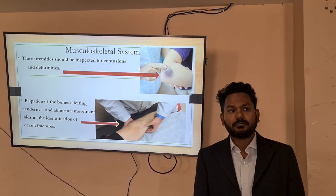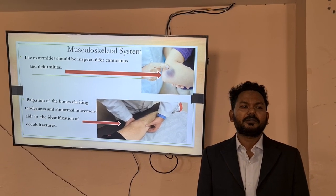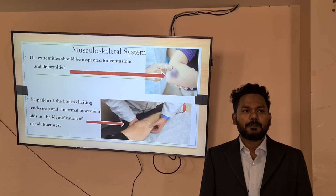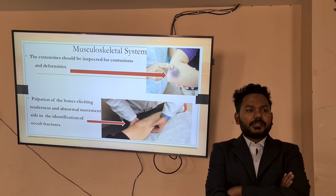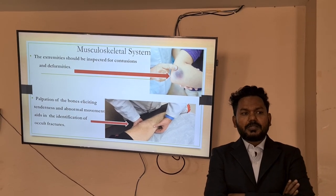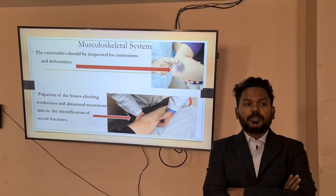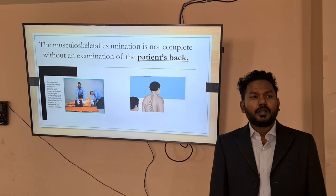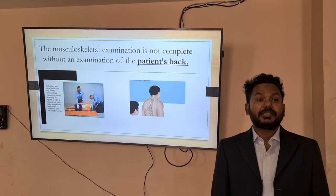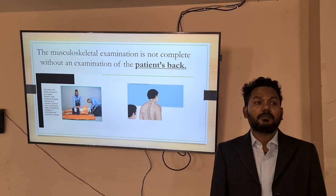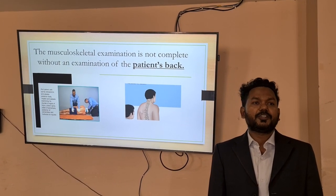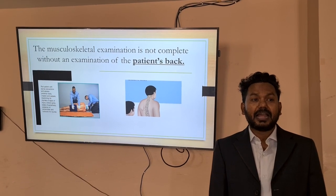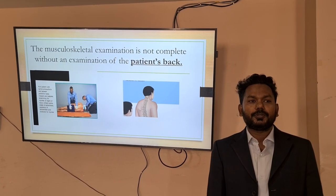In the musculoskeletal system, the extremities should be inspected for contusion and deformity. Palpation of the bones eliciting tenderness and abnormal movement is very helpful for the identification of occult fracture. Please do not forget to examine the patient's back, as the musculoskeletal examination is not complete without thorough examination of the patient's back including log roll.